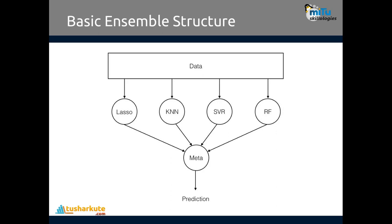Let us see a more useful simplified diagram. For example, I have data containing a continuous output, so I will apply regression algorithms. Some part of the data or all data is given to Lasso, then KNN regression, SVM regression, random forest regression. We combine all of them together in a meta-algorithm and find the average of all, which will be the prediction generated from this meta-algorithm. This is what we call ensemble learning.